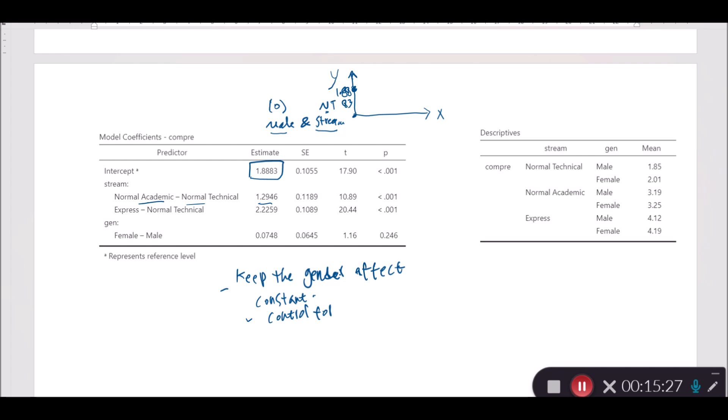Basically it's done in this way. First of all, we want to look at the differences between the mean of normal academic and normal technical only for males, and then in a separate analysis we do the same thing only for females. So we'll get two scores, in fact two estimates. Now what do we do with those two estimates?